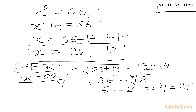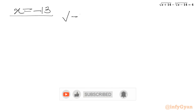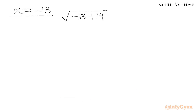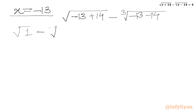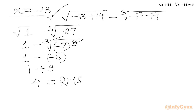Now checking x = -13: square root of (-13 + 14) minus cube root of (-13 - 14) = square root of 1 minus cube root of (-27) = 1 minus (-3) = 1 + 3 = 4, which equals our RHS. Hence, x = -13 is also a true solution.